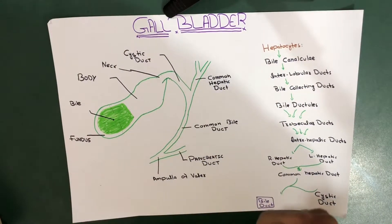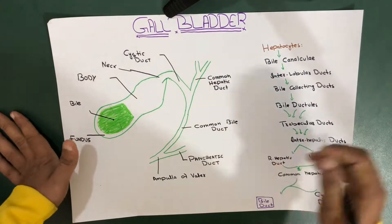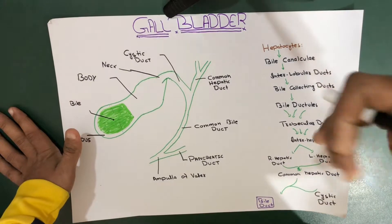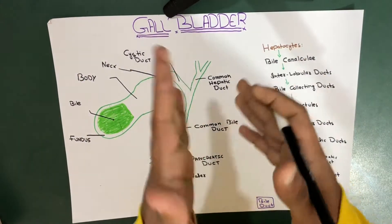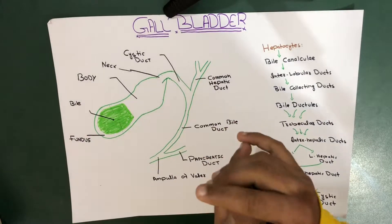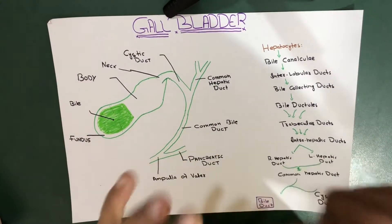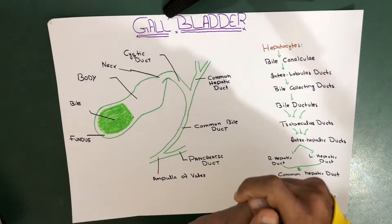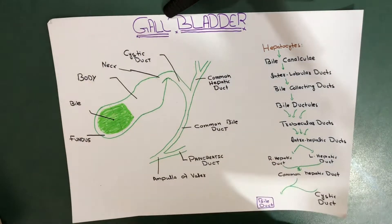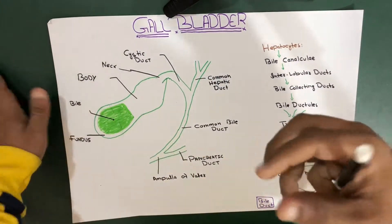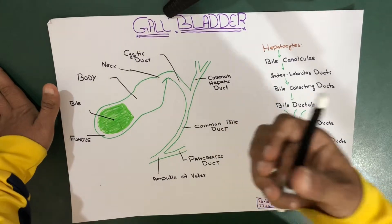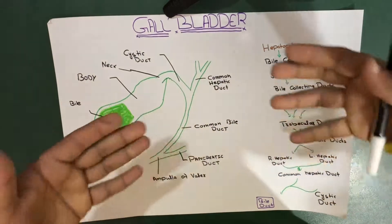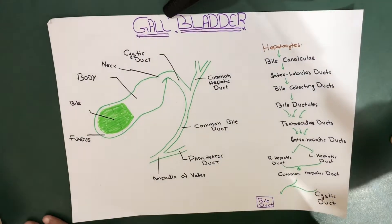One more thing to remember: your gallbladder is actually located in the right hypochondrial region. We have talked about the nine abdominal regions in another video. The gallbladder is surrounded by the peritoneum because our liver is surrounded by the peritoneum. Since the gallbladder is beneath the liver on the caudate lobe side, the peritoneum extends to the gallbladder, making it an intraperitoneal organ.